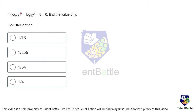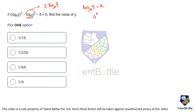Second problem: if (log y to base 4) squared minus log(y squared) to base 4 minus 8 equals 0, find the value of y. Notice that log(y squared) to base 4 can be written as 2 log y to base 4. Now substitute: let a equal log y to base 4.